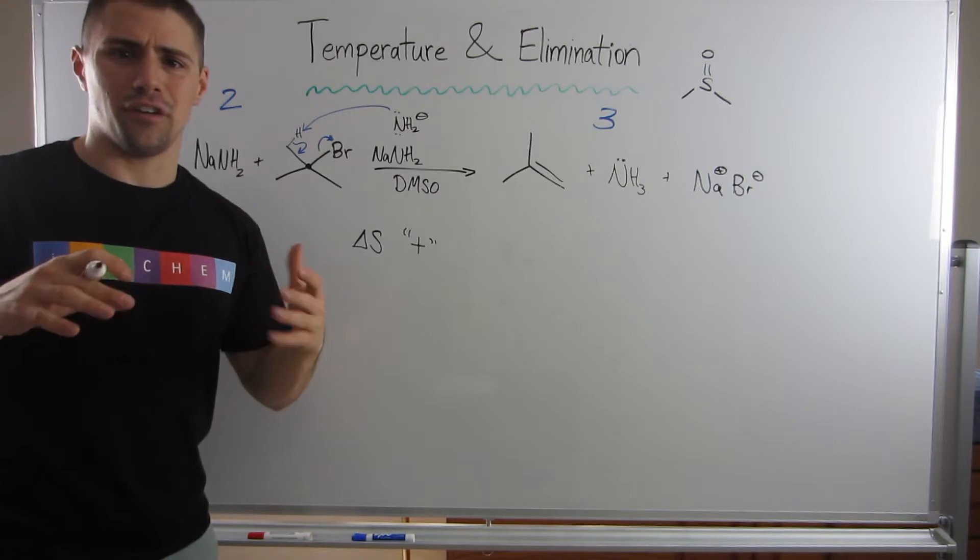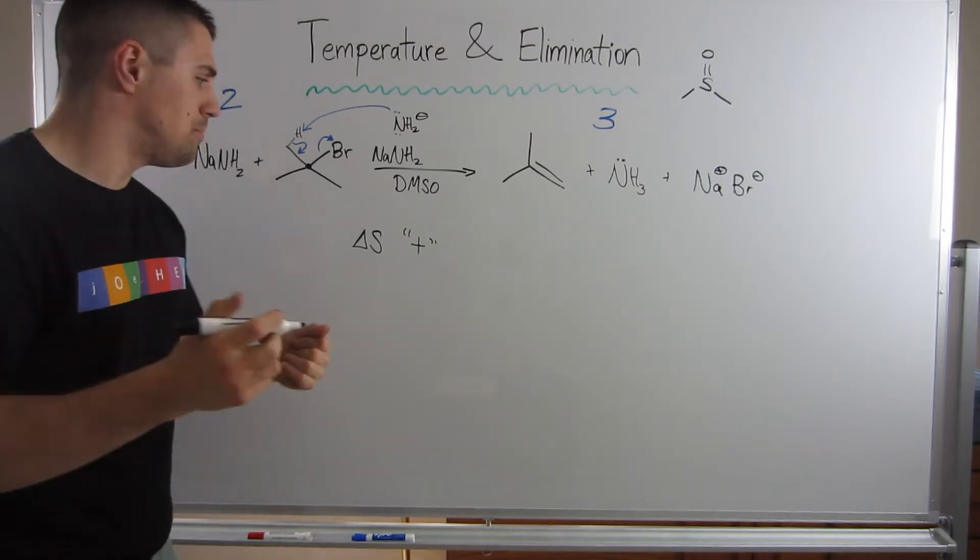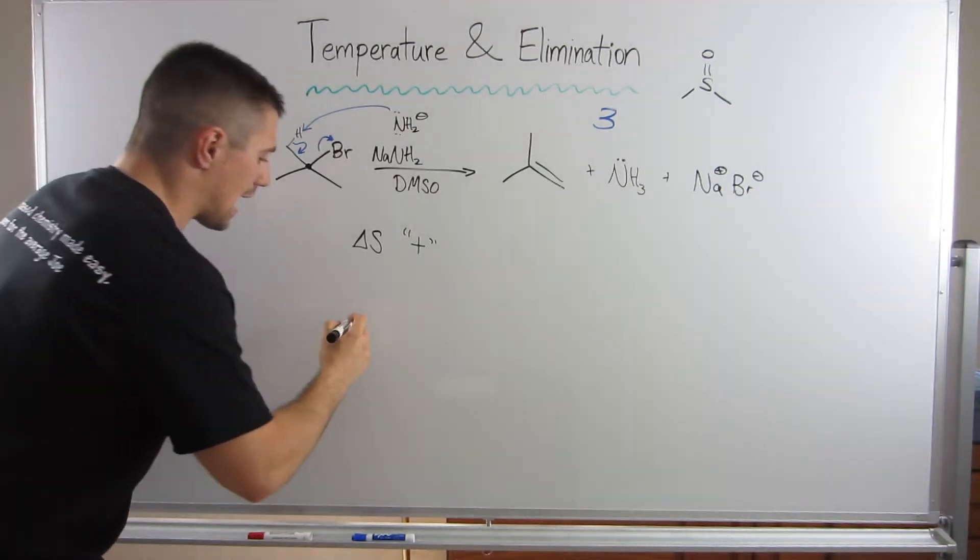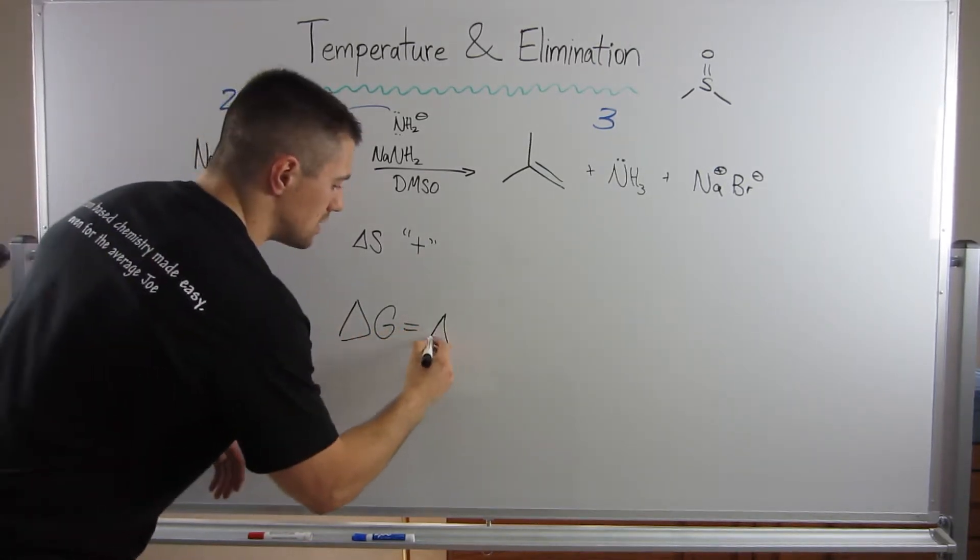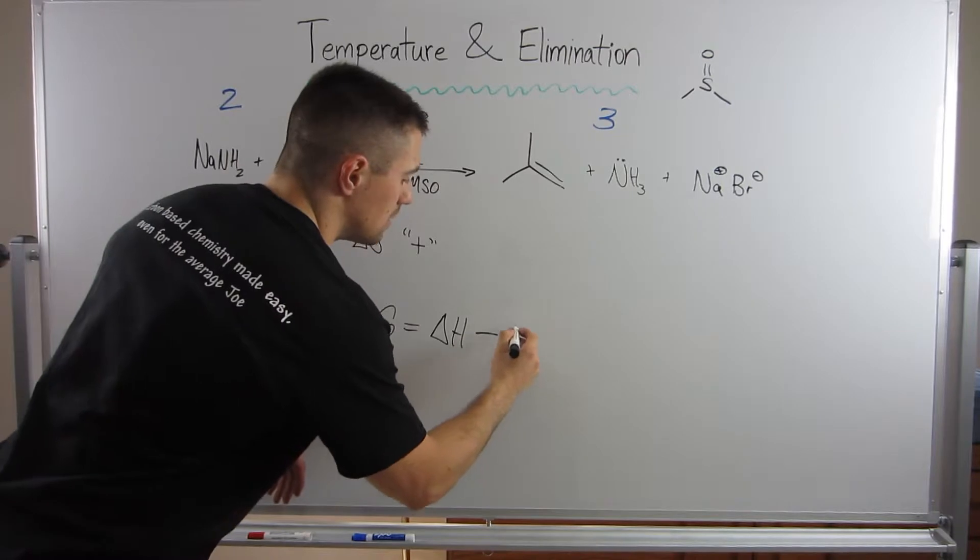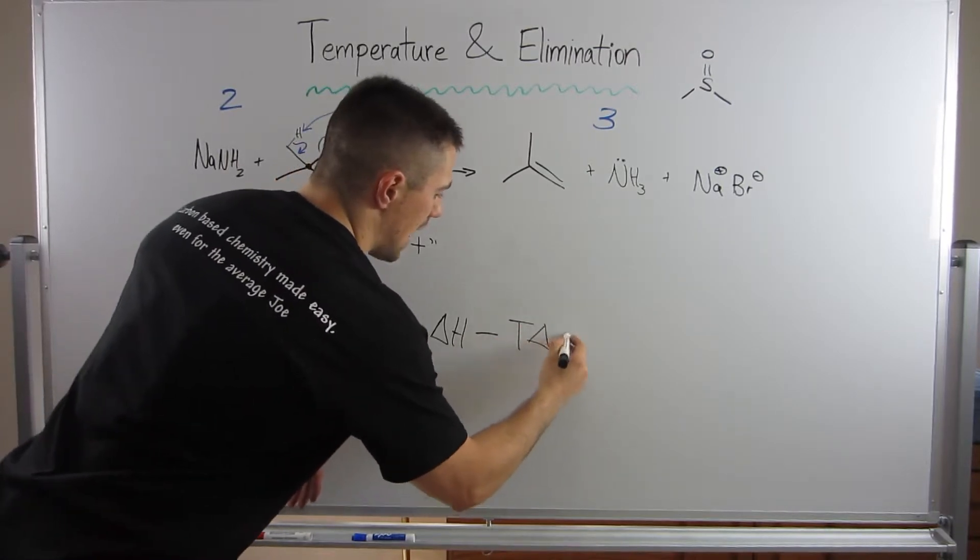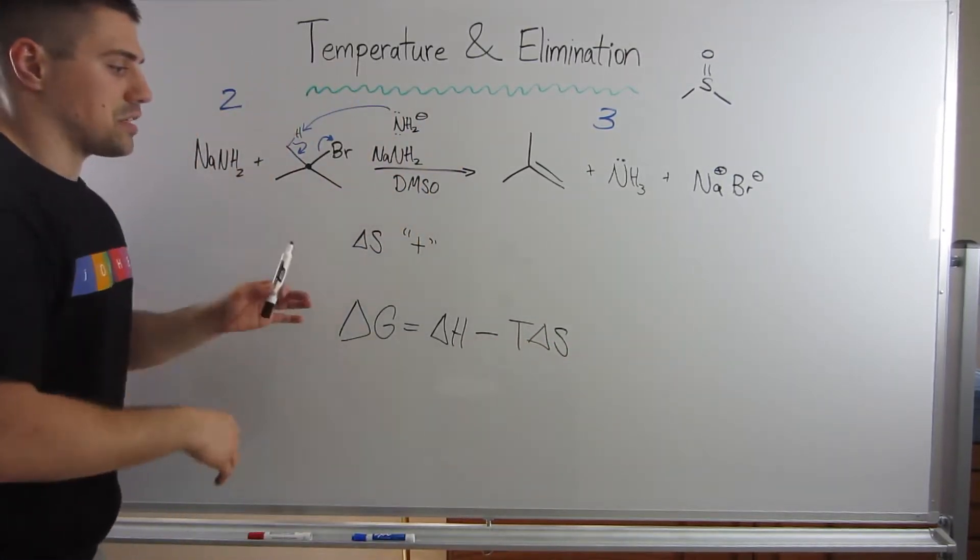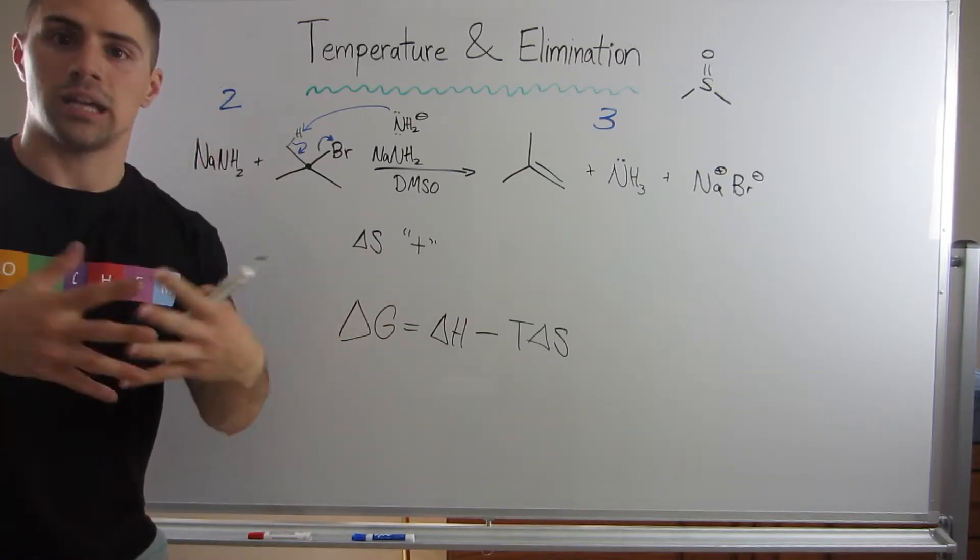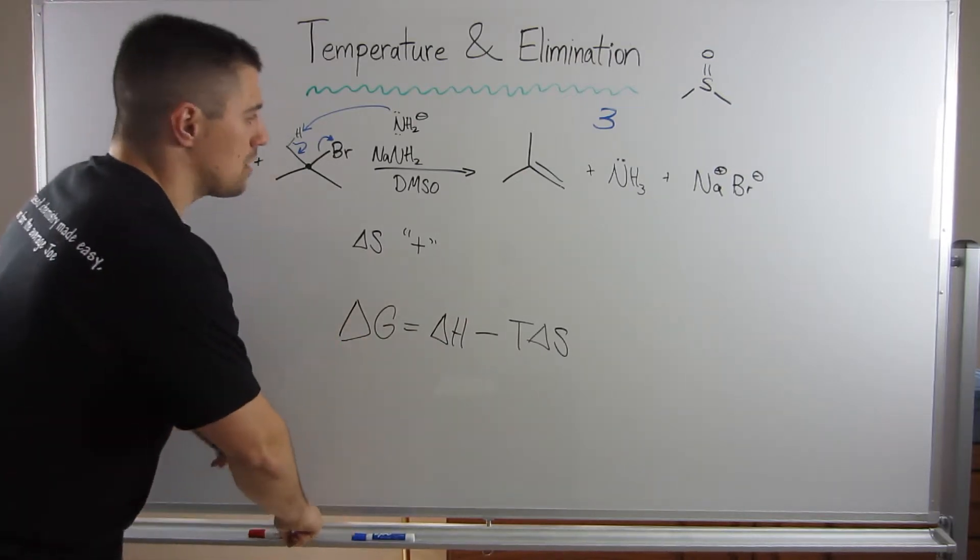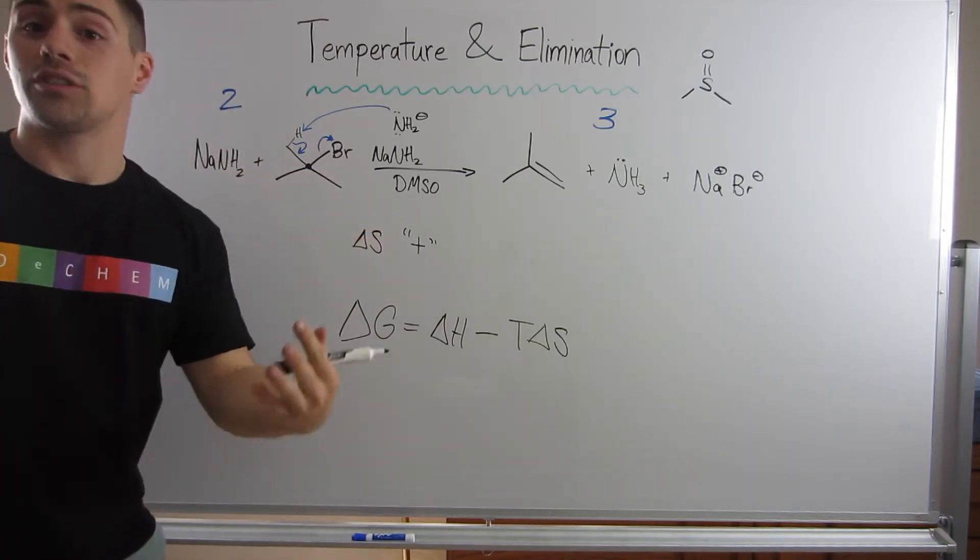How does this relate to temperature? Let's look at the Gibbs free energy equation: Delta G is equal to Delta H minus T Delta S. We see temperature in here, and this is how we're going to relate elimination and temperature together. These reactions that are happening, they're good, they're exothermic.